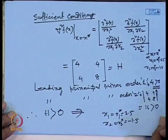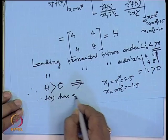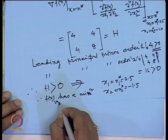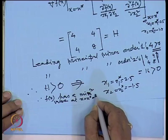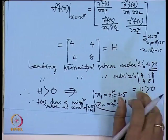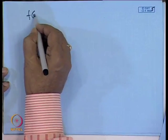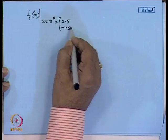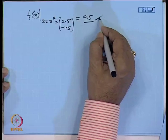Since H is positive definite, this implies the function attains its minimum value at x1 = 2.5, x2 = -1.5. The function f(x) has a minimum at x* = (2.5, -1.5). Substituting these values into the function expression gives f(x*) = 9.5. Please verify this.